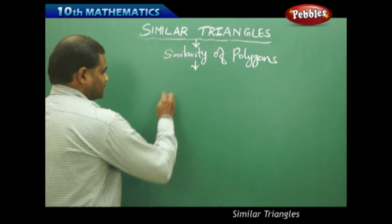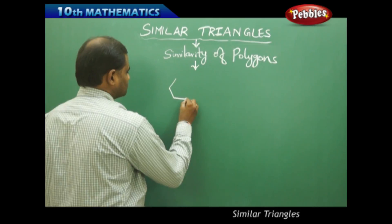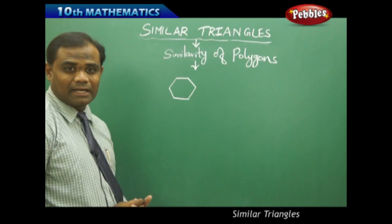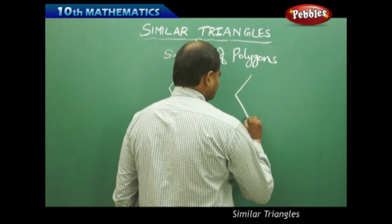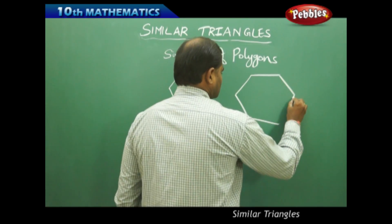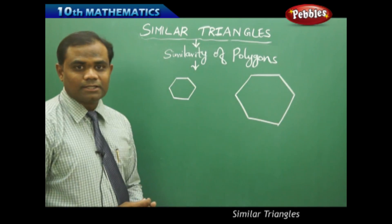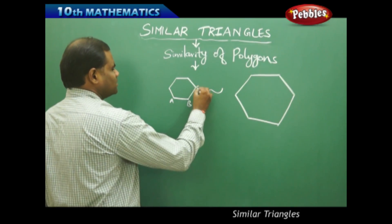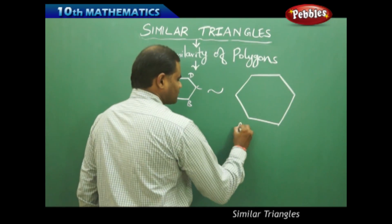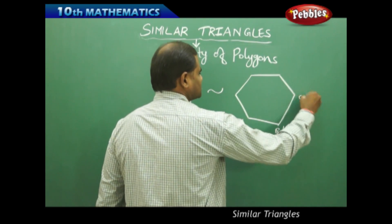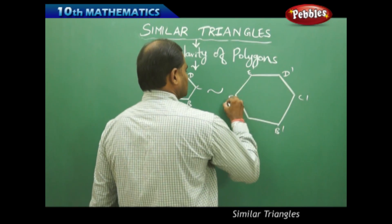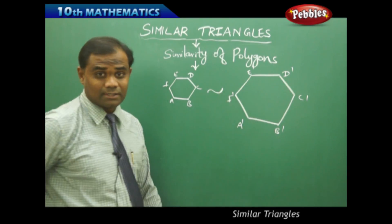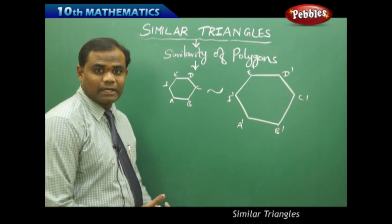For example, I take a hexagon. This is the hexagon I have considered here, and I take another hexagon. Then in this case, these two are said to be similar if the corresponding sides match. I mark the vertices A, B, C, D, E, F and A dash, B dash, C dash, and so on. Now these two polygons, which are hexagons — six-sided figures — are said to be similar in the same manner as we have defined for triangles.